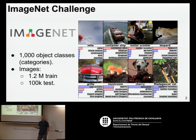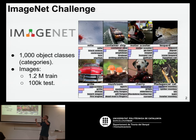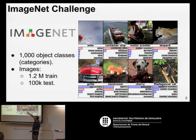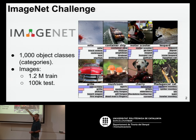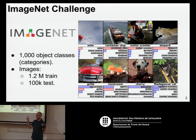The problem in this task was formulated as: given 1,000 object classes, tell me which class appears in the image, because each image had one label. One of the metrics allowed looking at the top five predictions and seeing if one of them was correct — then the prediction was considered correct. That's called the top-five accuracy.